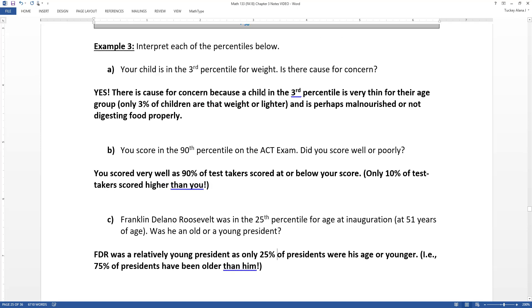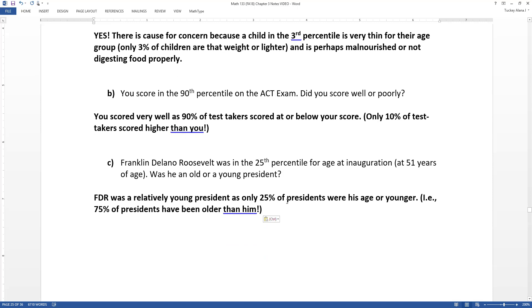So hopefully these three examples give you a sense of how the percentiles give you a sense of your position in the group. If your child's in the third percentile, you know they're on the low side, and that might be a cause for concern. If you score in the 90th percentile, you know you're on the high side, which in the case of an ACT exam is great. In the case of blood pressure, not so great. If you are president, yay you, and if you are in the 25th percentile, that means you're on the low side, so you're younger. So it gives you a sense of where you fall in the group in a very different way than z-score does.